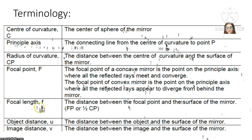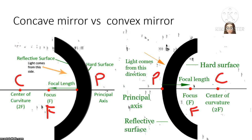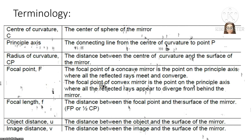Focal length F is the distance between the focal point and the surface of the mirror, equal to FP or half of CP. Object distance U is the distance between the object and the surface of the mirror. Image distance V is the distance between the image and the surface of the mirror.